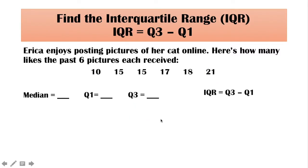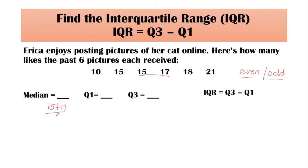Let us now find the interquartile range. Using the same example, since there are six pictures, it is an even number. I just want to give emphasis that finding the interquartile range for even and odd are different. Let us find the median first. The two middlemost numbers are 15 and 17. To find the median, we need to add 15 plus 17 and divide by 2. That is 32 divided by 2, which is equal to 16.